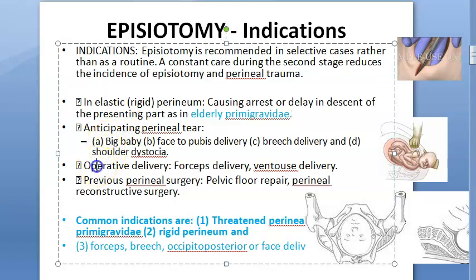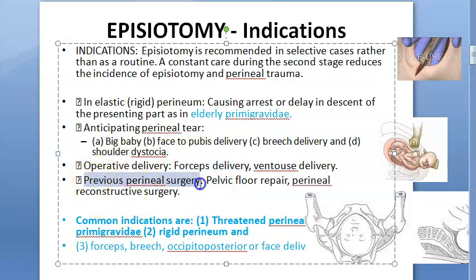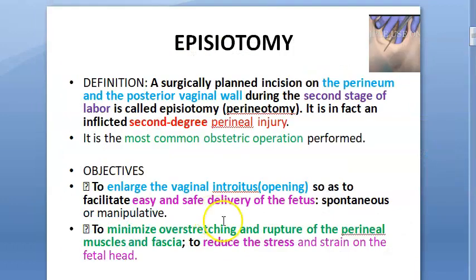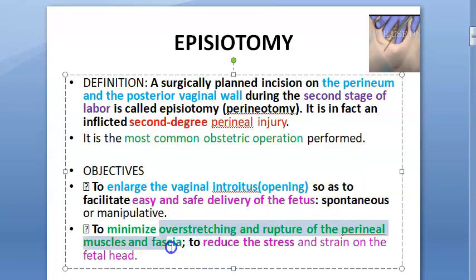Another indication is operative delivery — forceps delivery or ventouse delivery. Ventouse means vacuum. So if you want to use some instruments, that is an indication. Also, previous perineal surgery — if she has had surgery done there, like pelvic floor repair or perineal reconstructive surgery, you imagine how you don't want to put pressure there and overstretch it.